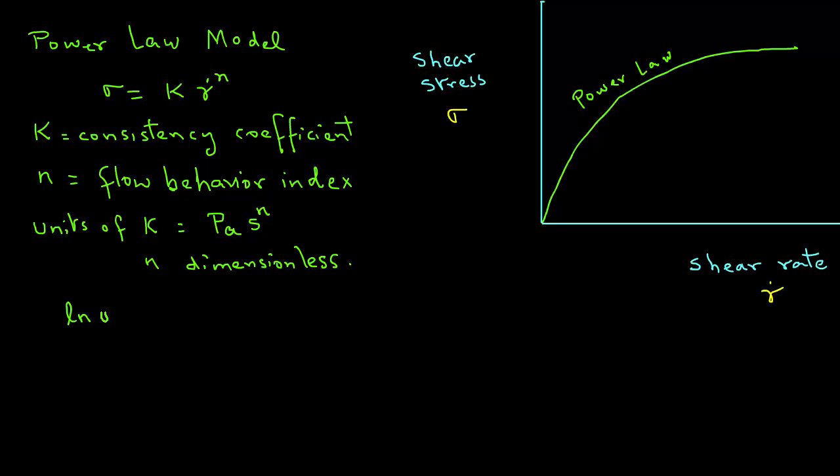Now, if we take a natural log of both sides of this power law equation, we get natural log of sigma equals natural log of k plus n times natural log of gamma dot.